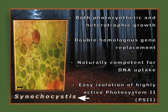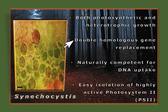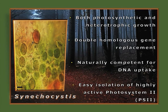Next comes Synechocystis. It is both photosynthetic and heterotrophic, enjoying both lifestyles. It has double homologous gene replacements and is naturally competent to uptake foreign DNA. It is easy to isolate photosystem II from Synechocystis, making it the model organism to study photosynthesis. We are truly indebted to Synechocystis for information regarding photosynthesis.